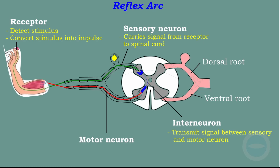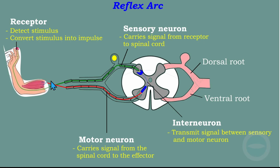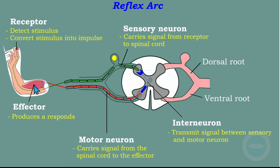The next part is the motor neuron. The function of the motor neuron is to carry signals from the spinal cord to the effector. The motor neuron takes signals away from the spinal cord. The difference is: sensory carries information to the spinal cord, while the motor neuron takes the signal away. The effector is the last part — the signal destination — and its function is to produce a response.